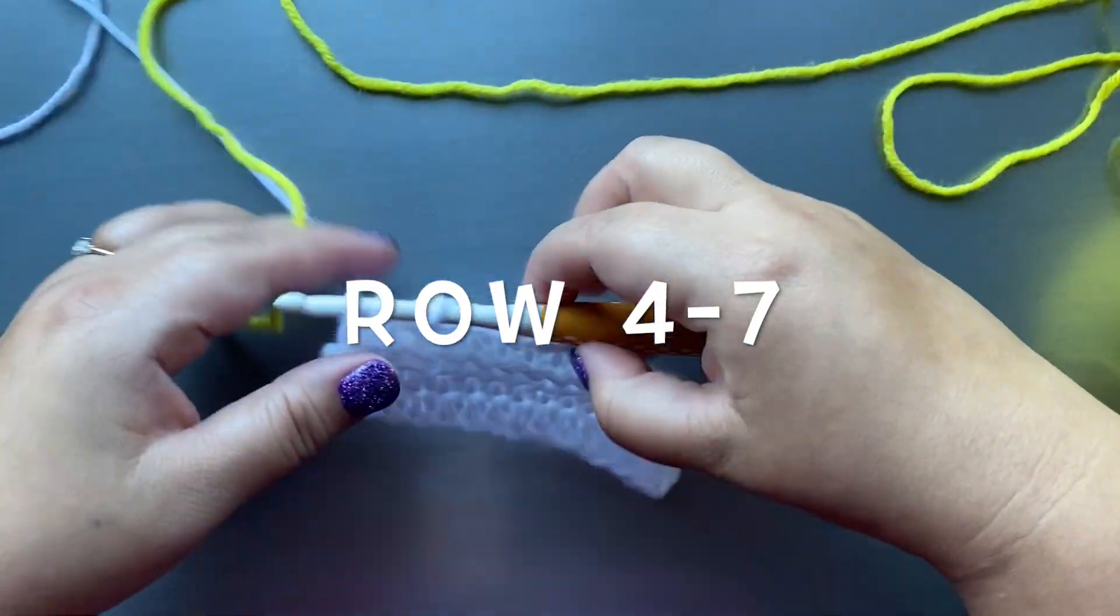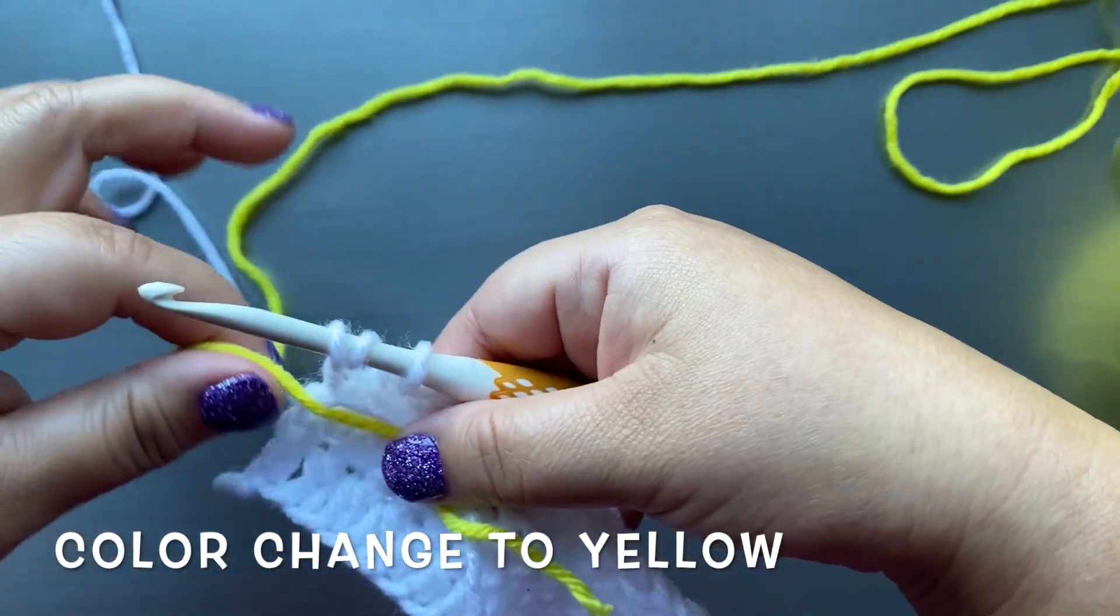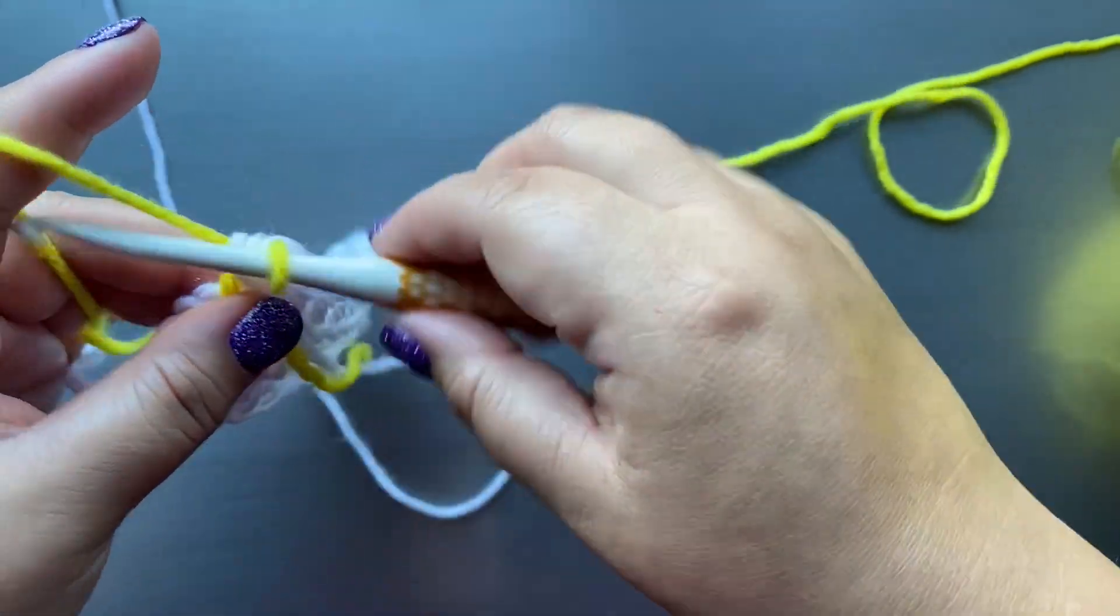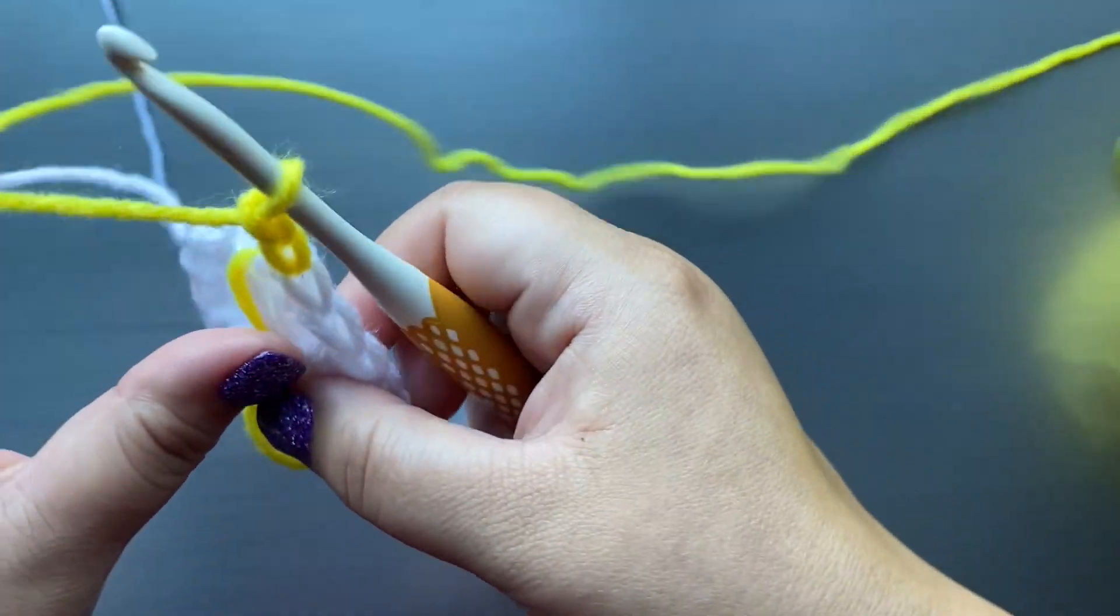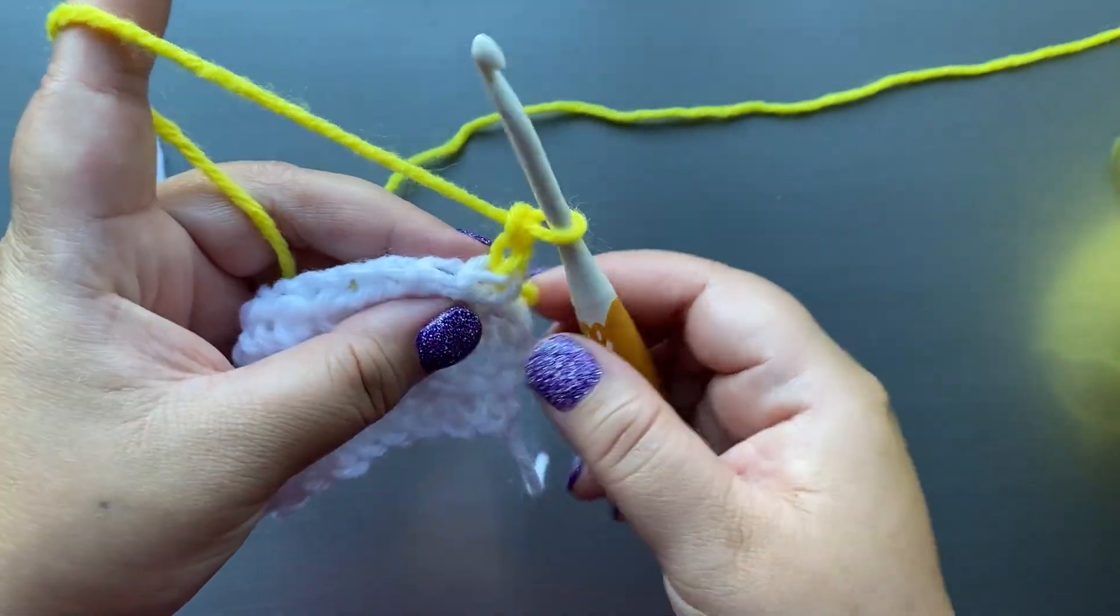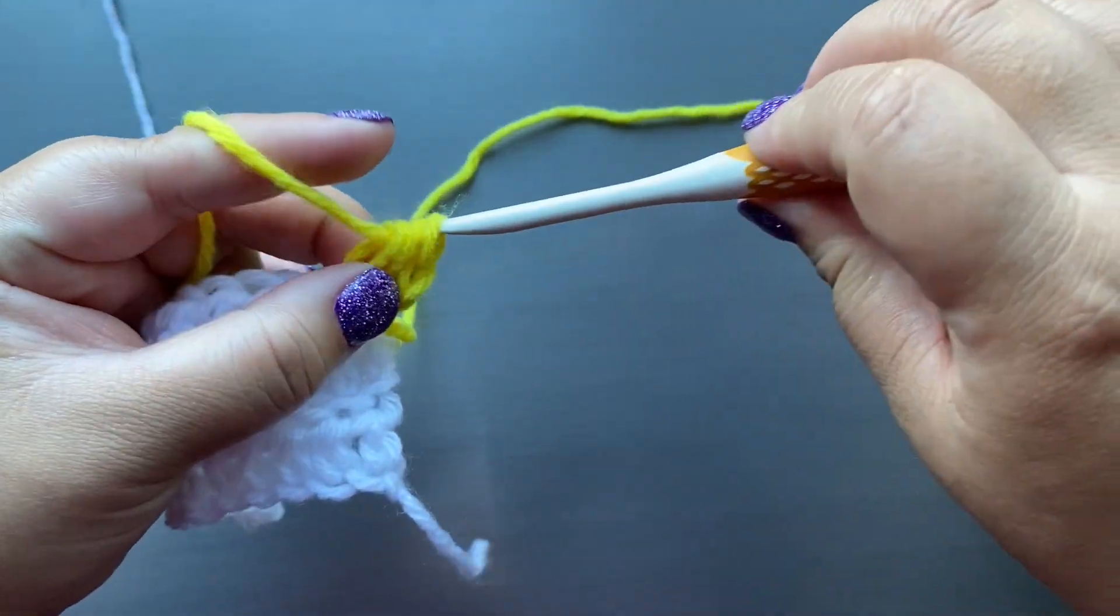Row four. We are going to color change at the end of our row three to yellow. Go ahead and repeat what we did for the previous rows. Continue to crochet with the yellow for a total of four rows.